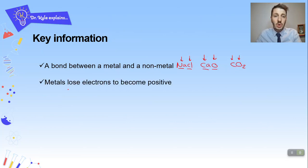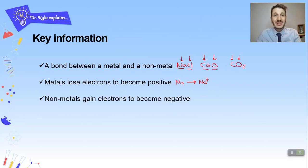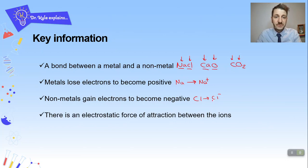Metals lose electrons to become positive. For example, sodium would lose one electron and form Na⁺. Whereas non-metals gain electrons to become negative — so chlorine would gain an electron and become Cl⁻. All metals become positive, all non-metals become negative. When that happens, there is an electrostatic force of attraction.